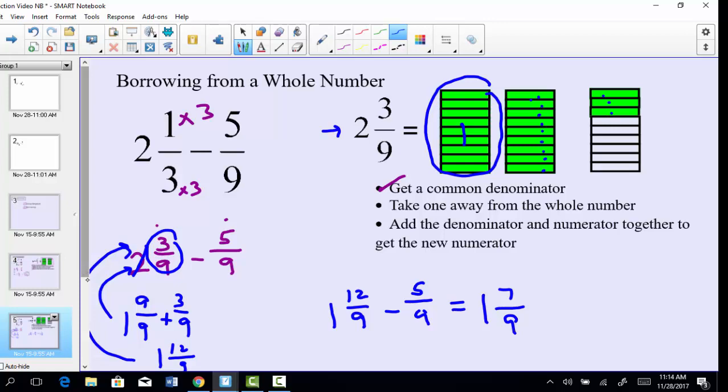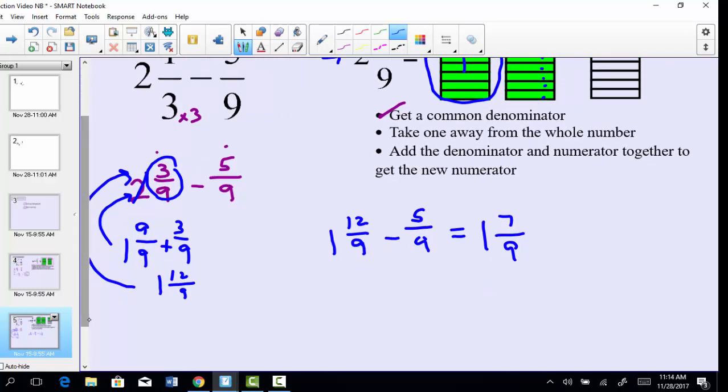Now I do want to show you that there is a little shortcut for borrowing. This would be the long method. What you really can do as a shortcut is, again, let me rewrite this, you've got 2 and 3/9. We can borrow from the 2 and make it a 1, and then all you need to do is add your numerator and your denominator. So 9 plus 3 gives you 12, and then keep the same denominator.